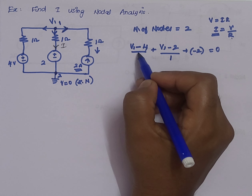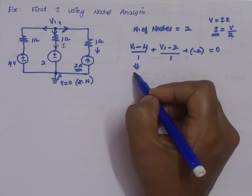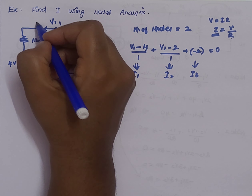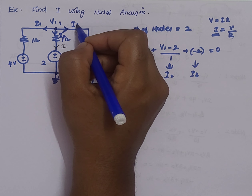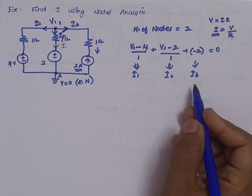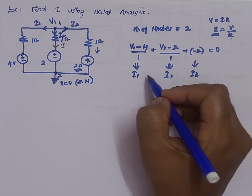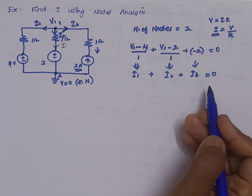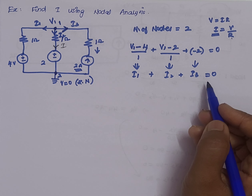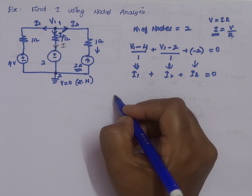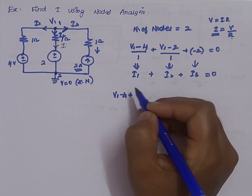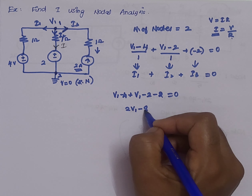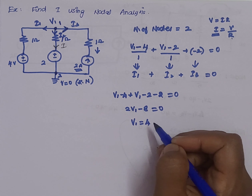Let us simplify. The three branch currents are I1 = (V1−4)/1, I2 = (V1−2)/1, and I3 = −2. Applying KCL: I1 + I2 + I3 = 0. This gives V1 − 4 + V1 − 2 − 2 = 0, so 2V1 − 8 = 0, which means V1 = 4.